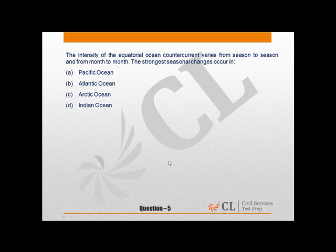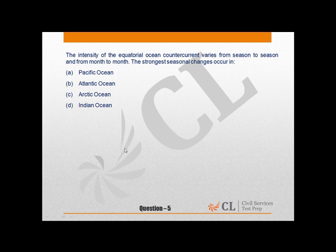Now moving on to question number 5. The intensity of the equatorial ocean counter current varies from season to season and from month to month. The strongest seasonal changes occur in: a) Pacific Ocean, b) Atlantic Ocean, c) Arctic Ocean, or d) Indian Ocean.